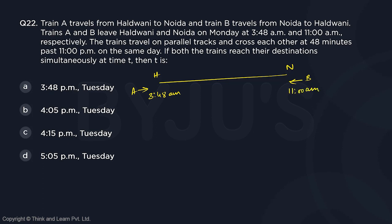The trains travel on parallel tracks and cross each other at 48 minutes past 11. So let's say they meet somewhere over here. This meeting point, let's call it point X. The meeting point is 11:48 p.m.